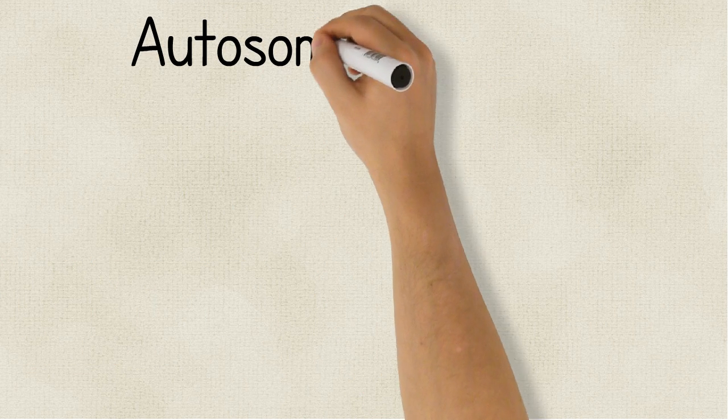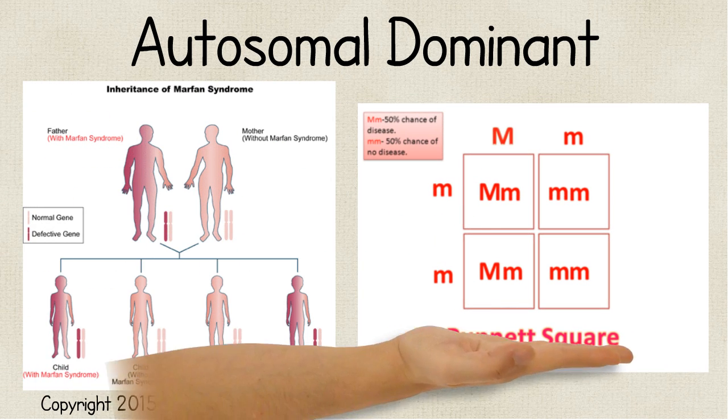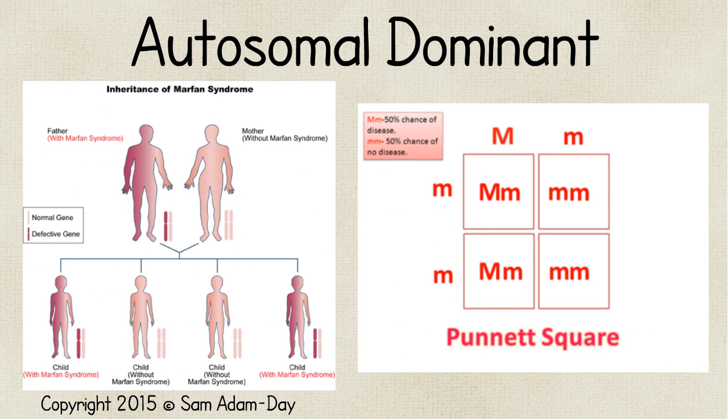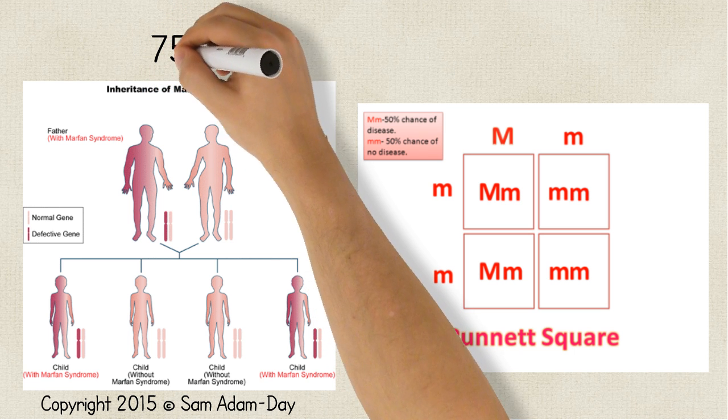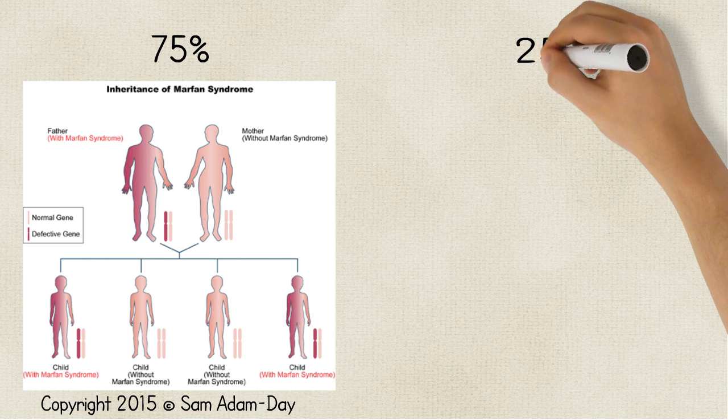Marfan's syndrome is an autosomal dominant trait, meaning a parent with Marfan's would have a 50% chance of passing it along to their children. In 75% of the cases of Marfan's, this is how the gene is inherited. However, in 25% of the cases, there is a new mutation in the FBN1 gene that occurs.